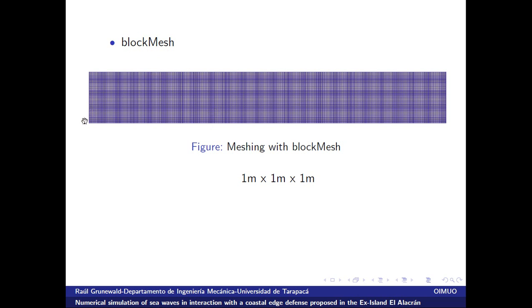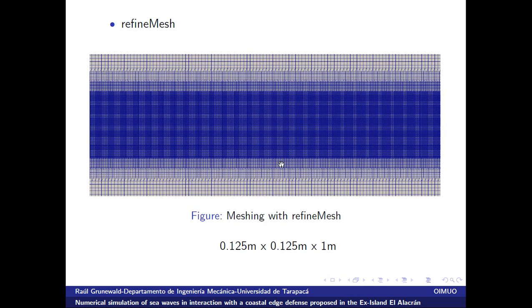For meshing, three meshing tools were used: BlockMesh, RefineMesh, and SnappyHexMesh. First, with BlockMesh, a block was created with 405 meter length, 56 meters width, and one meter depth, since this is a 2D simulation. The cells created have sides of one meter length, width, and depth. Then this zone in the middle was refined, because this is where the two phases — water and air — take place, and smaller elements better represent these phases.